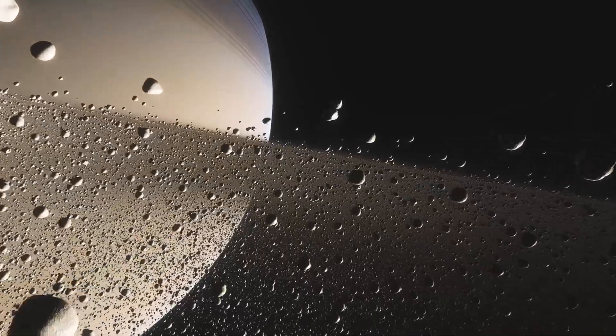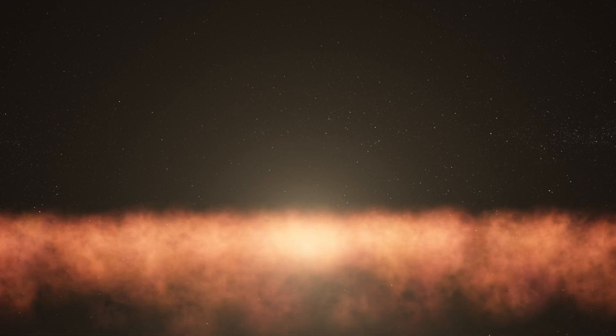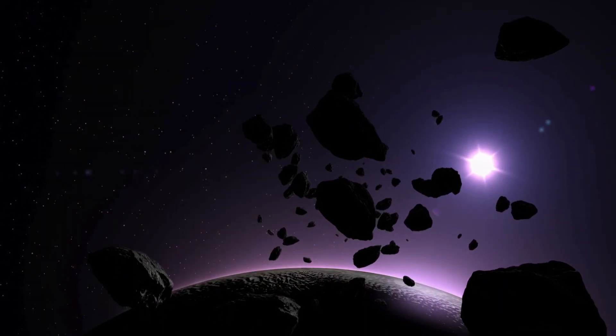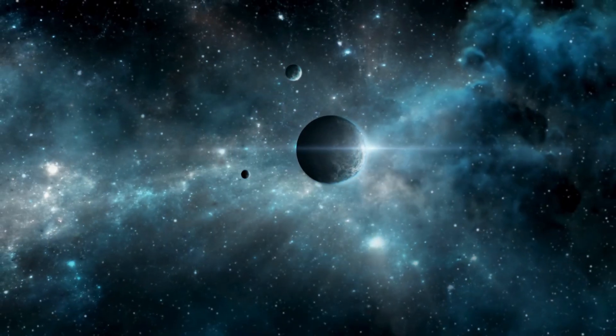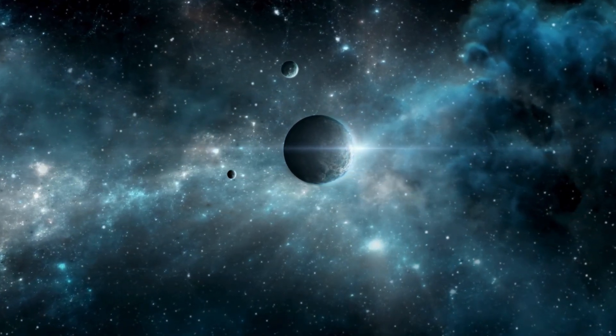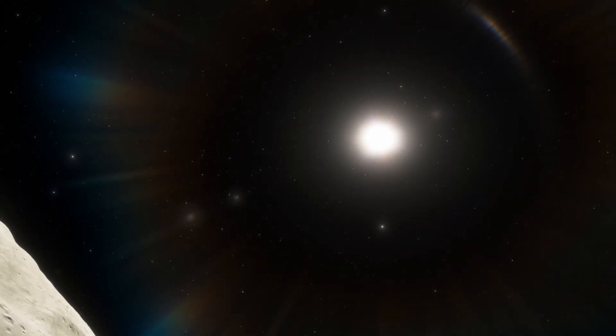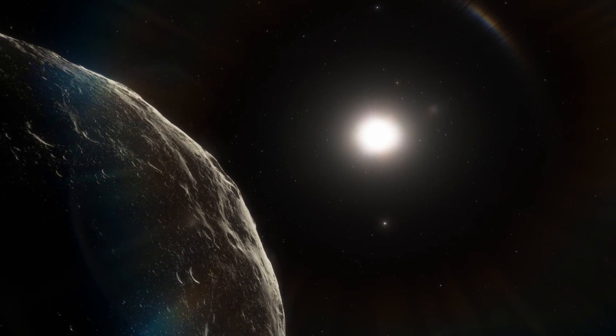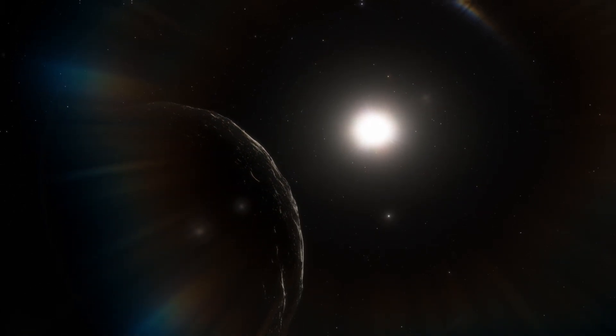What makes ammonite particularly intriguing is its orbit, which does not align with those of other sedenoids. This challenges the Planet 9 hypothesis, which suggests that a distant planet beyond Neptune may be influencing the orbits of such objects. Dr. Yu Kunhuang's simulations of ammonite's orbit suggest that its irregularity lowers the likelihood of Planet 9's existence.